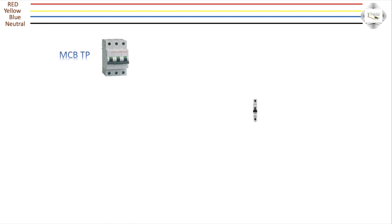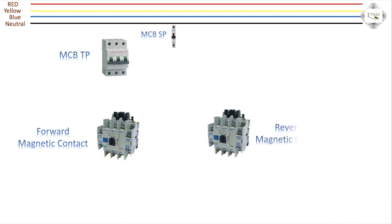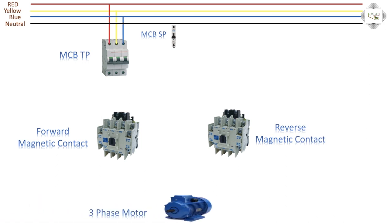We use an SP single-pole circuit breaker and magnetic contactors. For forward, use the first magnetic contactor; for reverse, use the second magnetic contactor. The industrial motor three-phase input comes from the MCB, three-phase line red yellow blue, outlet to the magnetic contactor.